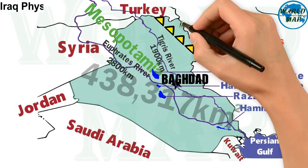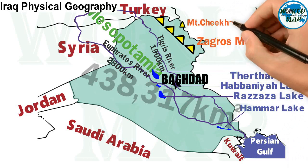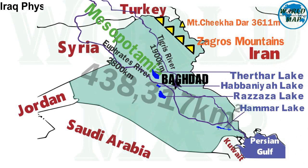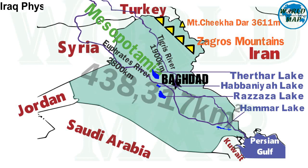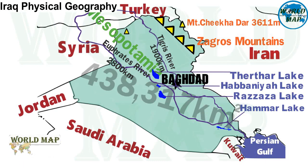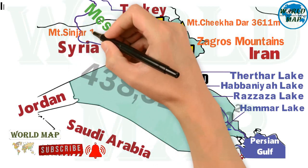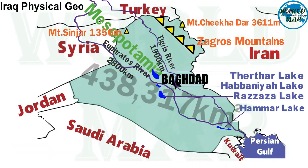Chika Dar, meaning 'black tent,' is the local Kurdish name for the mountain located in the Kurdistan region of Iraq. It is currently thought to be the highest peak in Iraq, claimed to be 3,611 meters high according to the CIA World Factbook. The Sinjar mountains are a 100-kilometer-long mountain range running east to west, with a height of 1,356 meters.